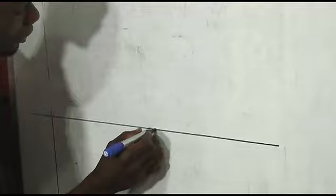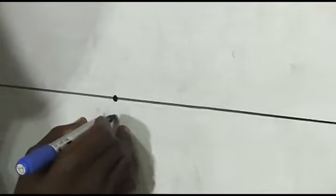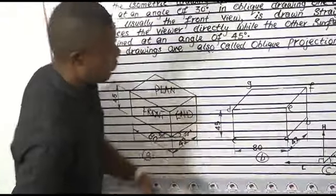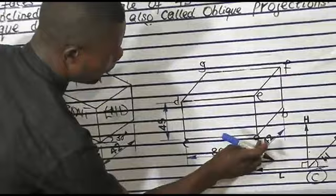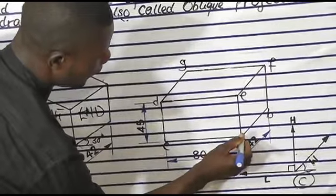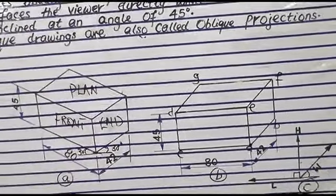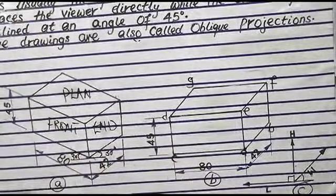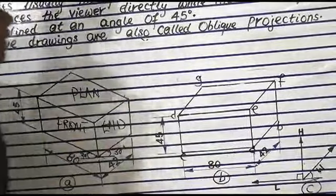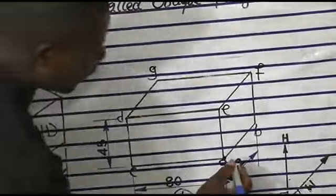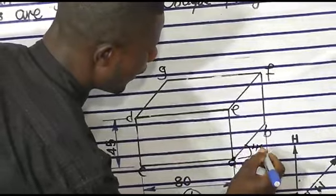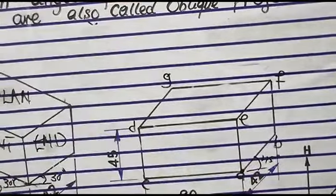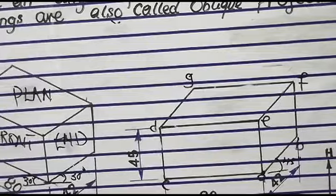You draw a horizontal line, then pick a point where your drawing is going to start from — let's call that point A. We are making reference to this drawing that we have here. You can see that line AC is a horizontal line, while line AB is an inclined line at an angle of 45 degrees. Remember, this is an oblique drawing, so the inclined lines must be at an angle of 45 degrees.